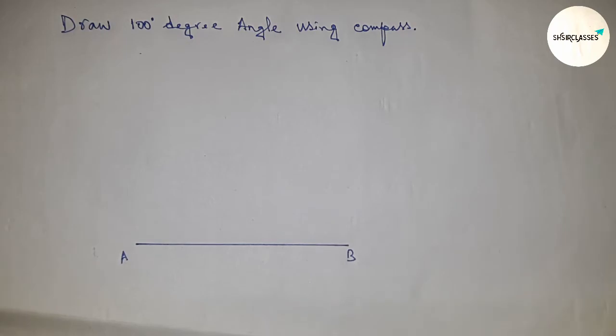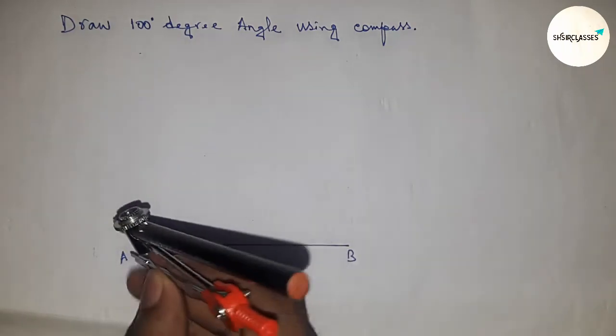So first of all, drawing a line here and this is A B. So this is the A B line.